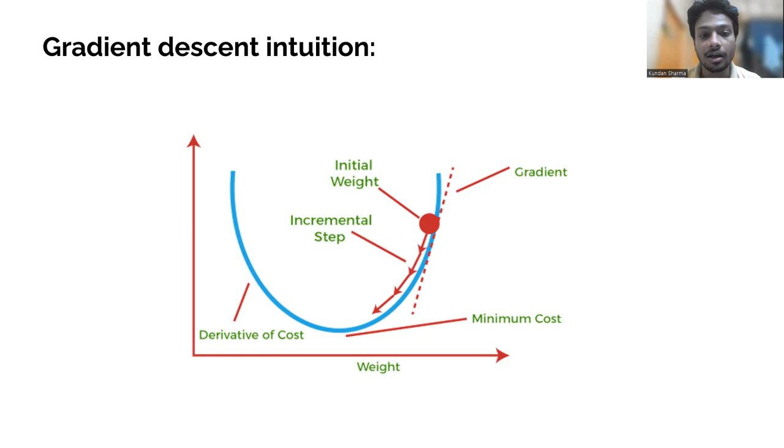model our loss in such a way that it has this shape. So basically it's a convex loss function so that it has only one minima. Practically it's kind of hard to do so, but that's the goal that we should be focusing on.